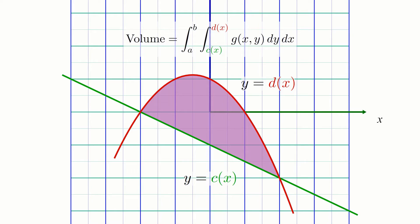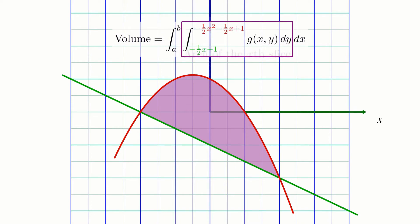For this video, I'll just give away that the formula for the line here is y equals negative a half x minus 1, and the formula for the parabola is y equals negative a half x squared minus a half x plus 1. Plug these in as your inner integration bounds, and we have a full description of the area of any slice of the solid given its x position.